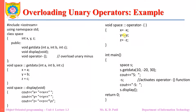Let us see how that operator function is defined. The return type is given, followed by the name of the class, followed by the scope resolution operator, followed by the keyword 'operator', followed by the unary operator symbol — the minus sign. It is defined in the same way a member function is defined; the only difference is that instead of a function name, the keyword 'operator' is used for overloading, followed by the operator. When the unary minus is applied, the values of x, y, and z of the object are all changed.